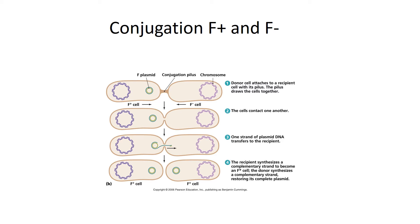An F-plus bacterium is going to be our donor bacterium, and it's going to conjugate with our F-minus bacterium, which is going to be our recipient bacterium. This is called an F-minus bacterium because it does not have the fertility plasmid — it just has its single circular chromosome.